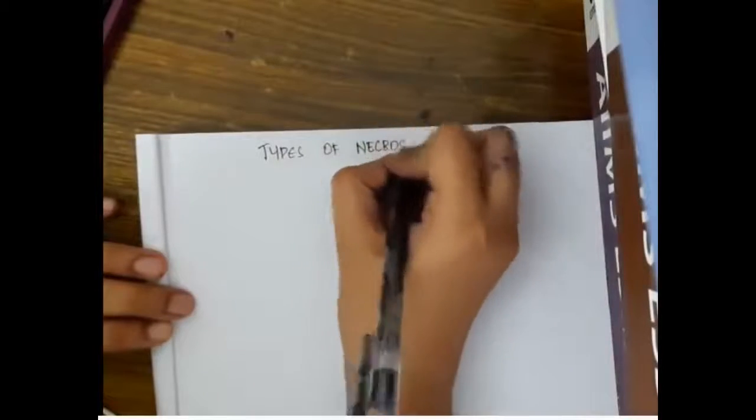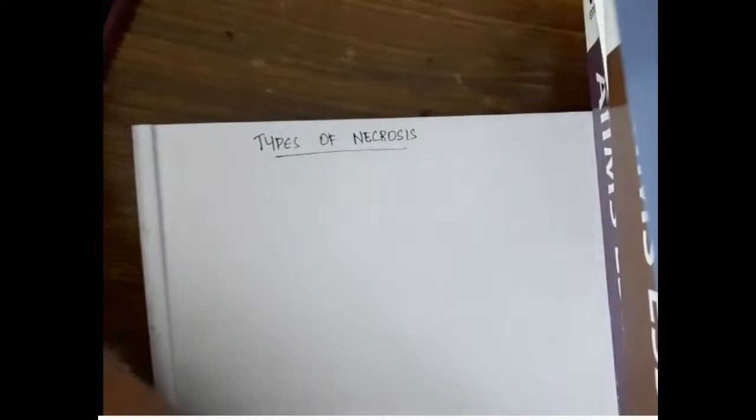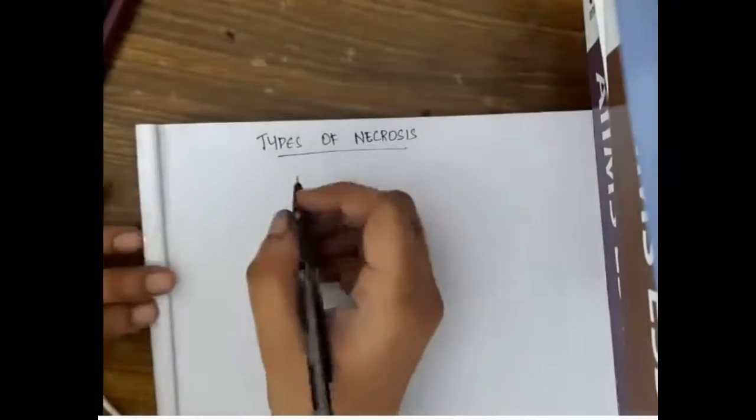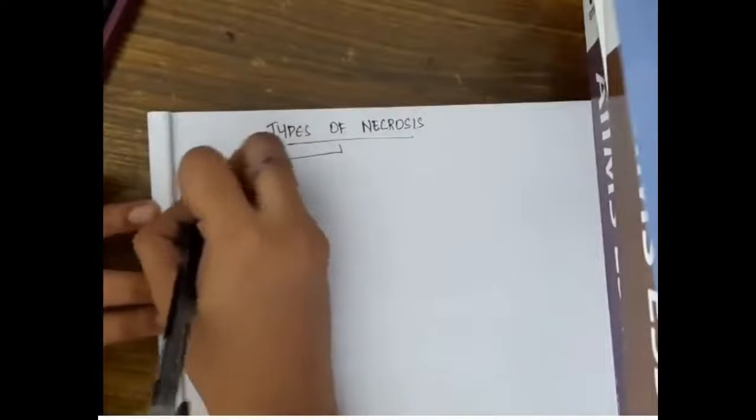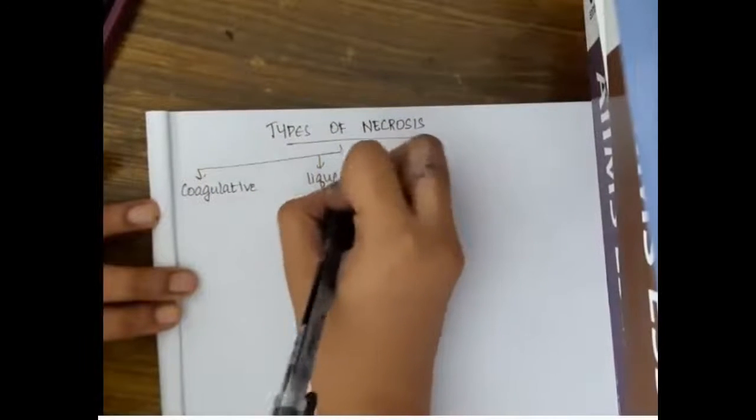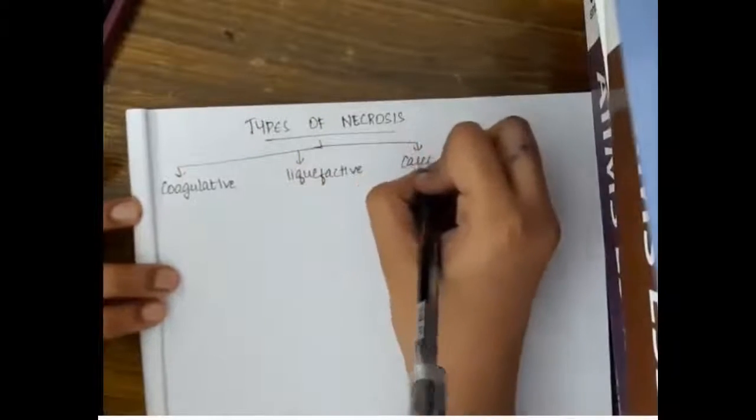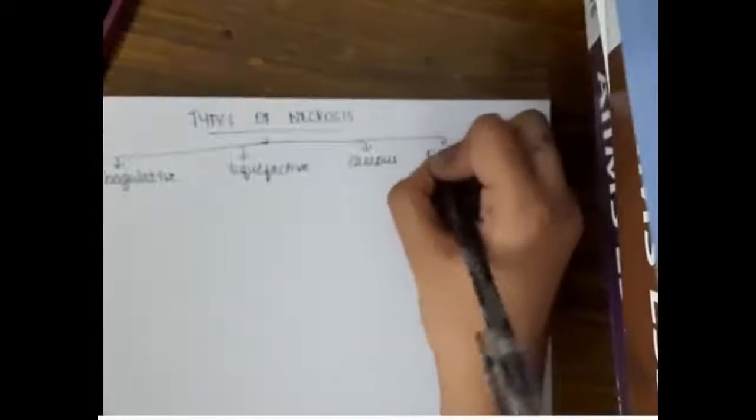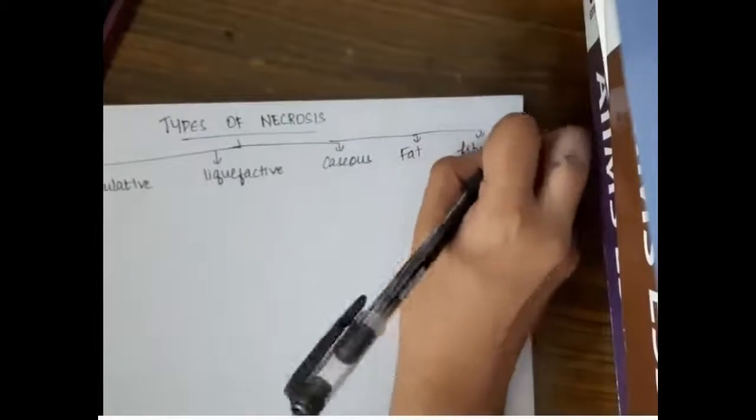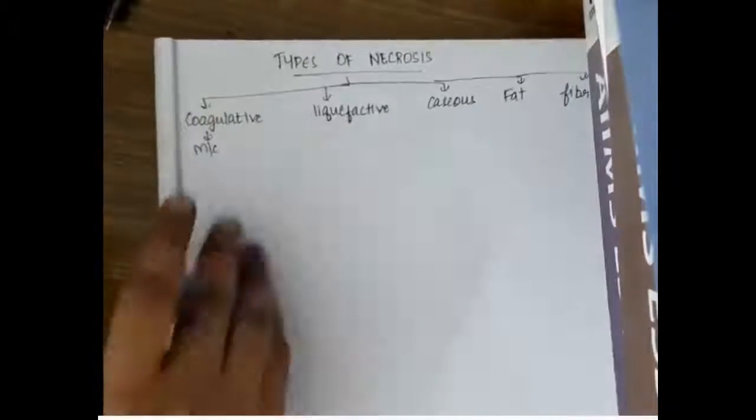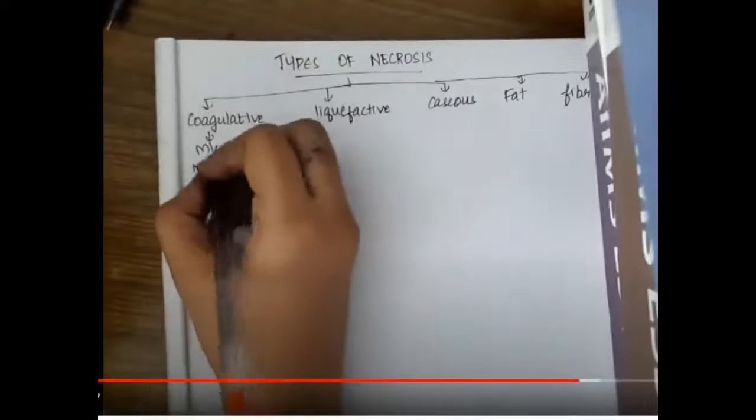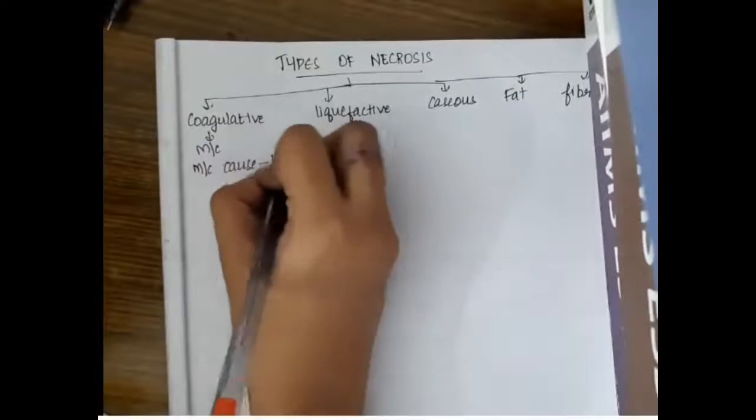Hello friends, let us now learn about necrosis. First we will see the types of necrosis. Necrosis is death of a cell which occurs due to some stimuli. Necrosis can be divided into five major types: coagulative necrosis, liquefactive necrosis, caseous necrosis, fat necrosis, and fibrinoid necrosis.